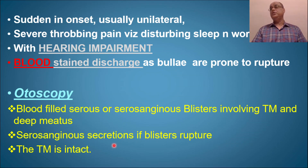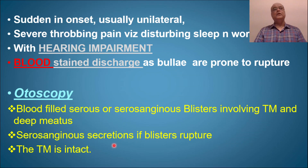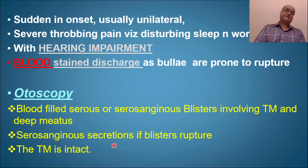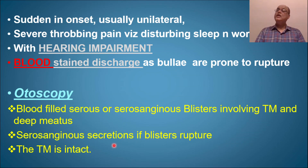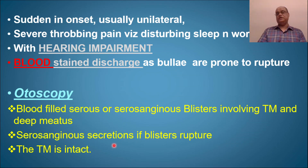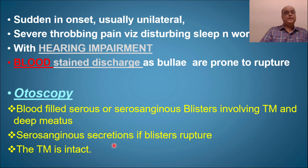Fluid accumulation in the middle ear is called otitis media with effusion, caused by Eustachian tube blockage following upper respiratory tract infection — a chain of events leading to conductive hearing loss. Additionally, since this is a viral infection, viruses may involve nerves causing viral neuritis. If the vestibulocochlear nerve — especially the cochlear part — is affected, the patient may also have sensorineural hearing loss.